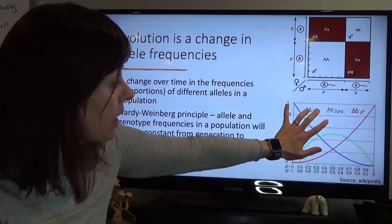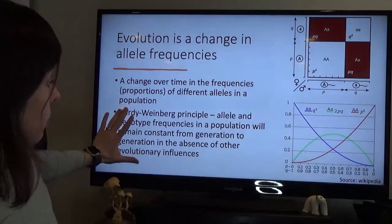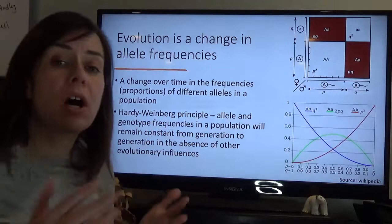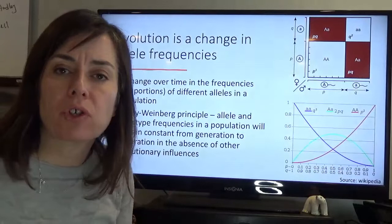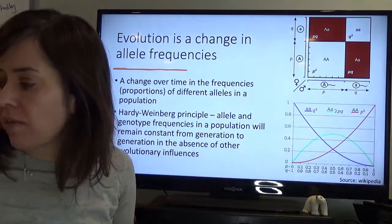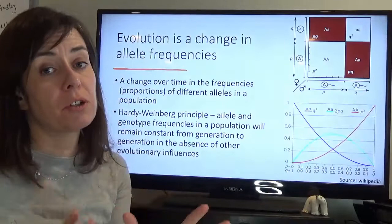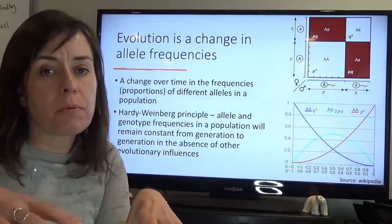This follows the Hardy-Weinberg principle. Under this principle, allele and genotype frequencies in a population will remain constant from generation to generation in the absence of other evolutionary influences — including mutation, genetic drift, natural selection, and other evolutionary forces. Once those evolutionary forces come into play, they can lead to a shift in allele frequencies, but under Hardy-Weinberg, if we know the proportion of each allele, that stays relatively constant.